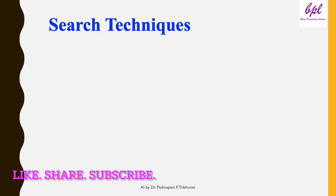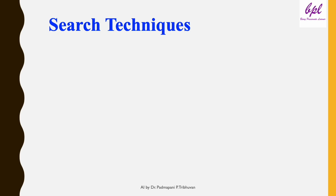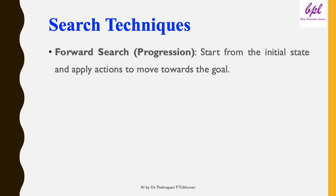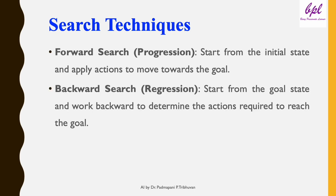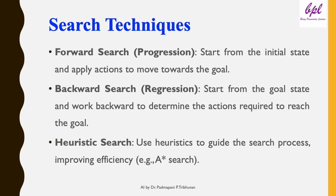The state space is the set of all possible states the system can be in, determined by applying actions to initial states. Planning involves searching this state space for a path to the goal. There are several approaches to search for a solution: forward search, backward search, and heuristic search. Forward search starts from the initial state and applies actions to move towards the goal — also called progression. Backward search starts from the goal state and works backward to determine the required actions — also called regression. Heuristic search uses heuristics to guide the search process, improving efficiency; for example, the A* algorithm uses smart guesses to speed up the process.